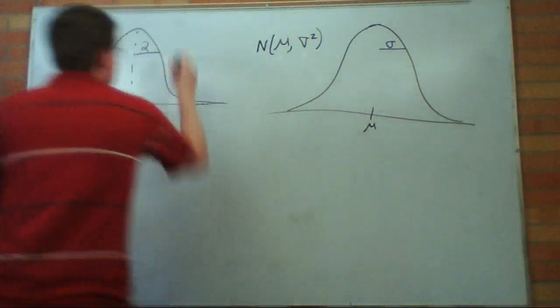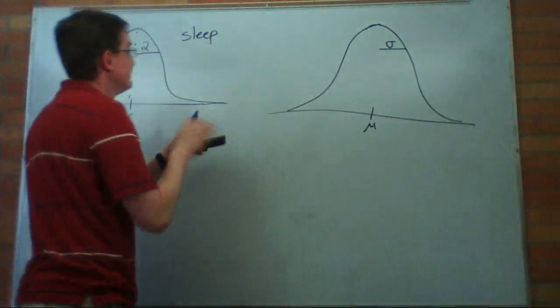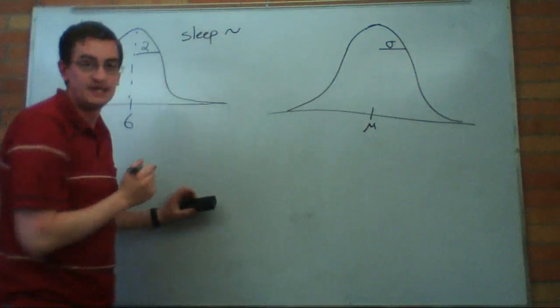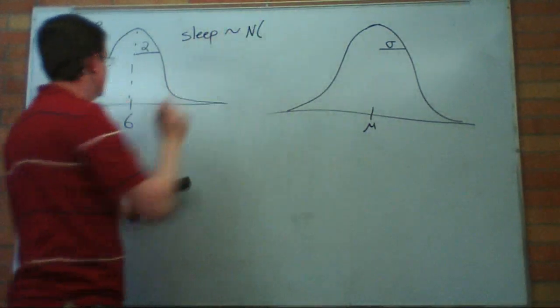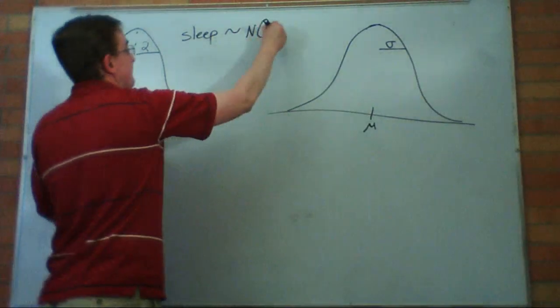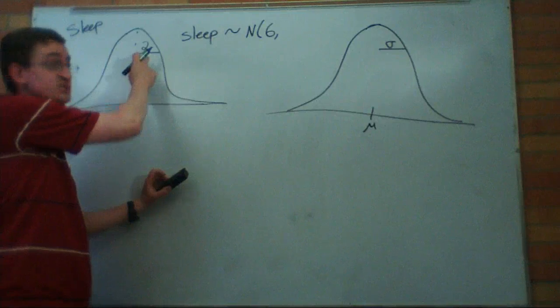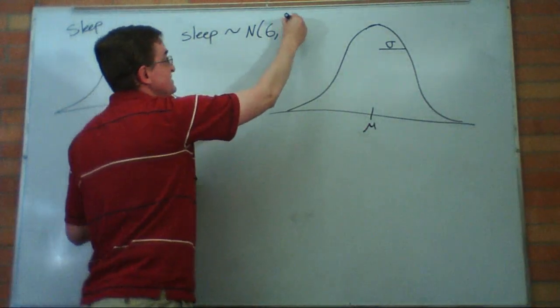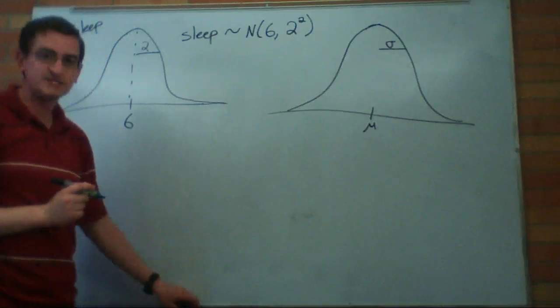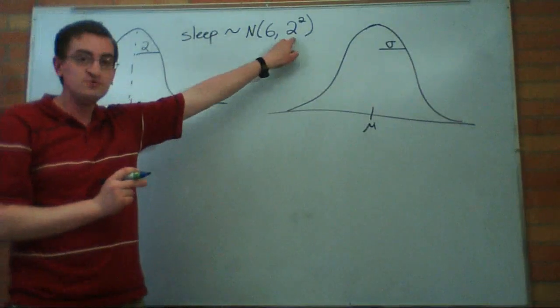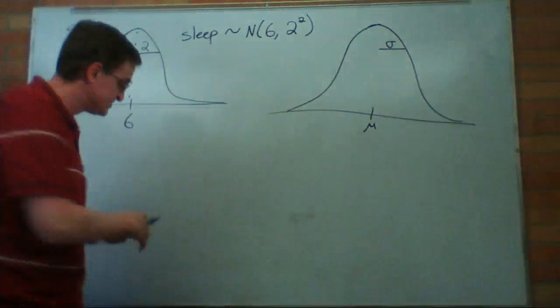What we would say is sleep, and we're going to do a little squiggly sign for 'is distributed', I mean sleep is distributed normal centered at six. And now I need to put the variance. The standard deviation is two, so I can either put four or I can just go like this: two squared. And you'll see that notation a lot because it emphasizes that two is the standard deviation and that's the number that we're interested in.